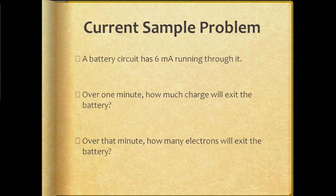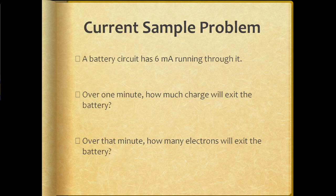Let's take a quick second to utilize this formula at least once. Let's say you've built a circuit with a battery and a light bulb, and it has six milliamps of current running through it. Over one minute, how much charge will exit the battery? And additionally, over that minute, how many electrons individually are going to exit that battery — how many electrons make up this current?